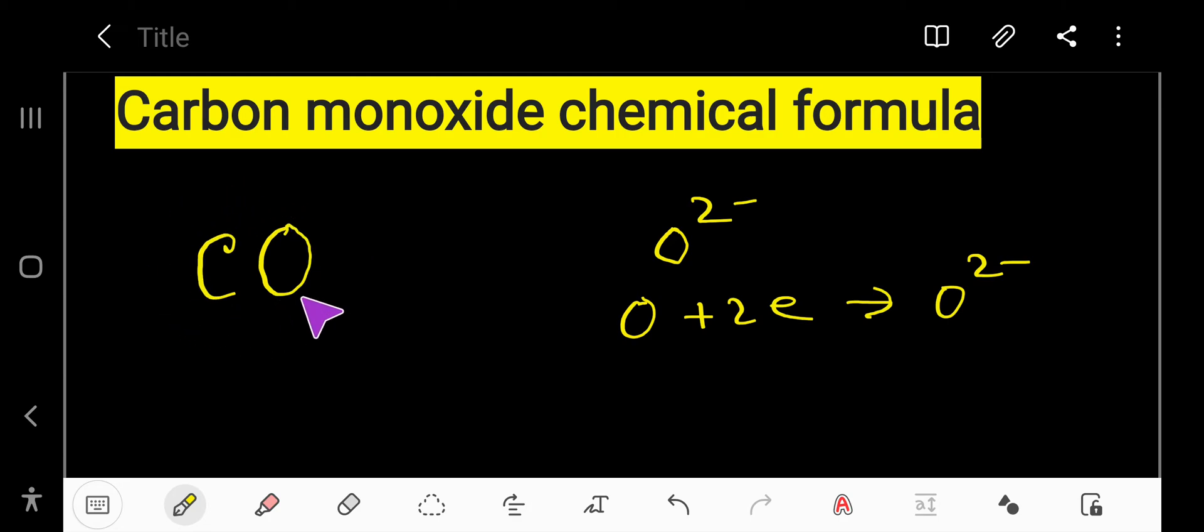Carbon monoxide is a compound, and the number of atoms in a single molecule is two: one atom of carbon and one atom of oxygen.